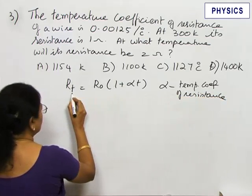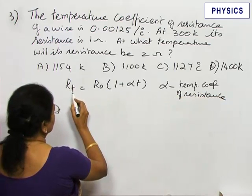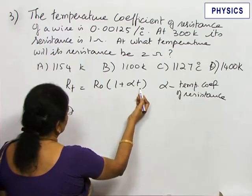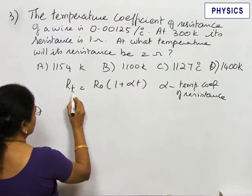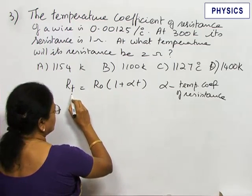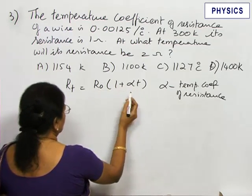Now, if T is the temperature in Celsius, RT is the resistance. T can be either in Celsius or in Kelvin, no problem. RT represents the resistance of the wire at this given temperature, R0 at 0 degrees, and then this is the relation.